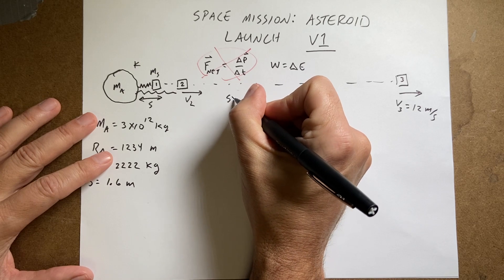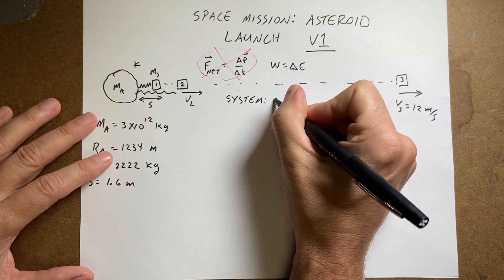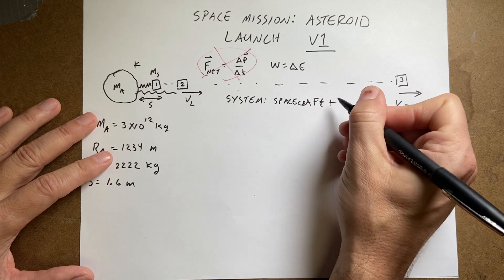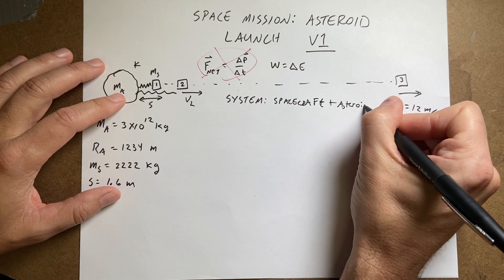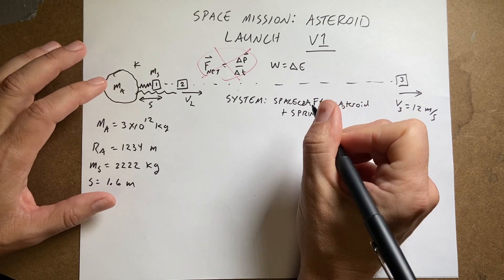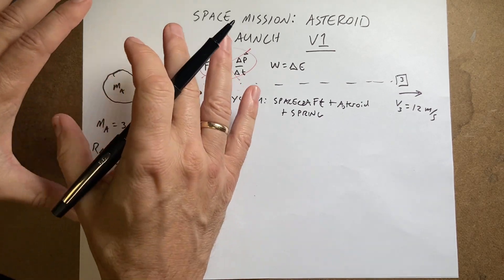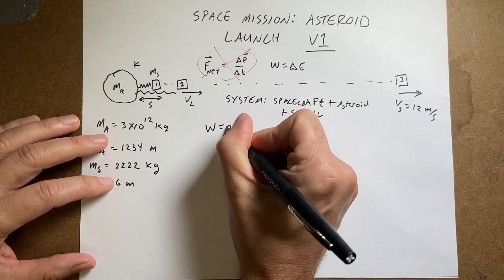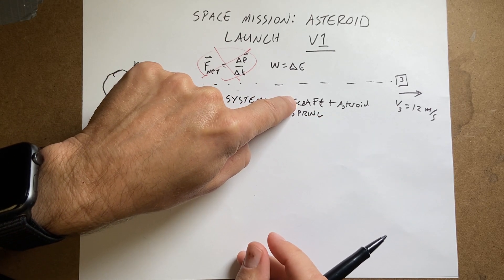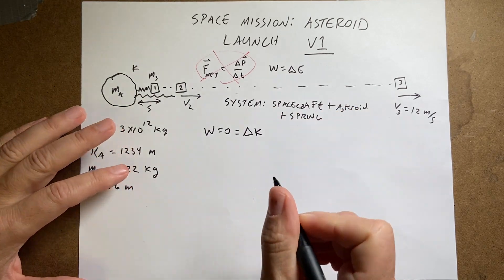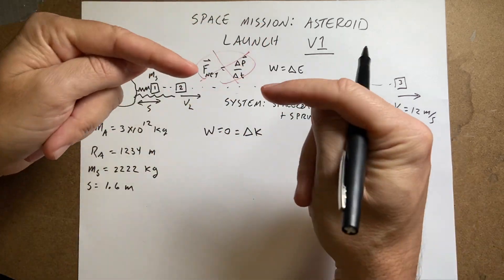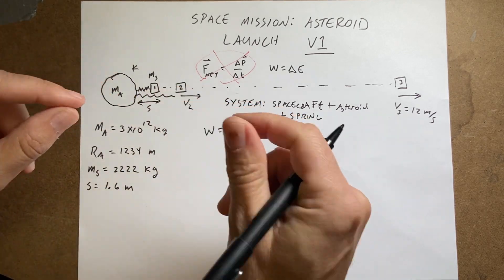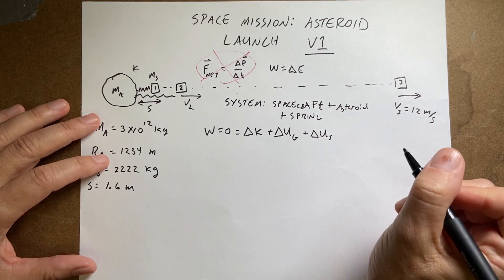The first thing I need to do is define my system. I'm going to say my system is the spacecraft plus the asteroid plus the spring. So all that stuff is in my system. If all that stuff is in my system, what external interactions do work on it? There are none — so the work equals zero. Since I have the spacecraft, I can have a change in kinetic energy, delta K. Since I have the spacecraft and asteroid, there's a gravitational interaction, so I'll have a change in gravitational potential energy, delta UG. And since there's a spring, I'll have a change in spring potential energy.